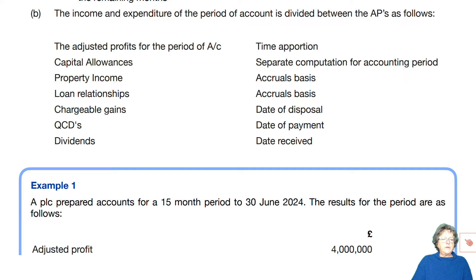Now, some of this is very obvious. If you have a set of adjusted profits, then you will need to time apportion that accordingly. But you can do two separate computations because you will have dates and that will allow you to do that. Property income and loan relationships is normally on an accruals basis. Gains, QCDs, and dividends will all be on dates because you have dates and therefore you can put them specifically into one or the other.